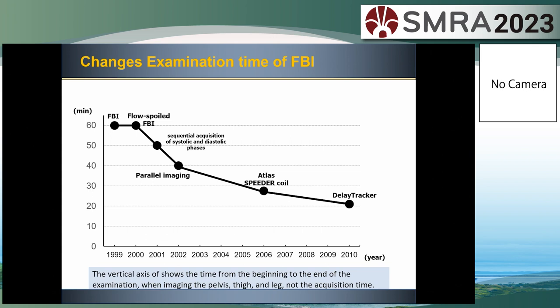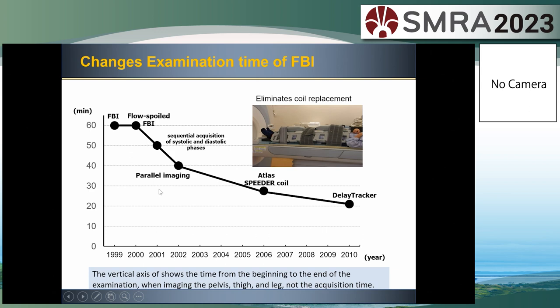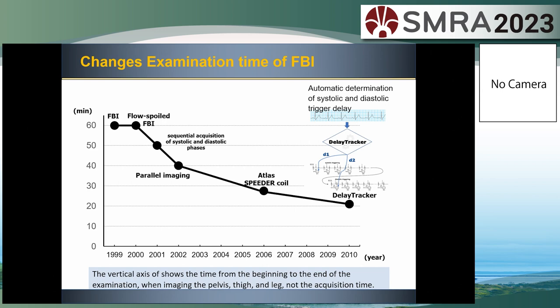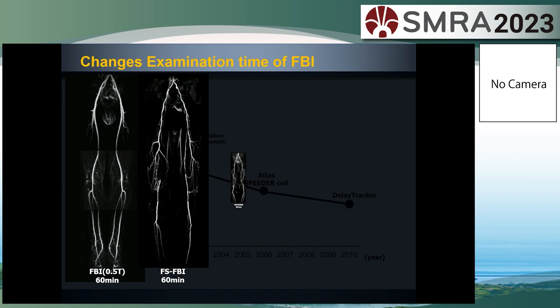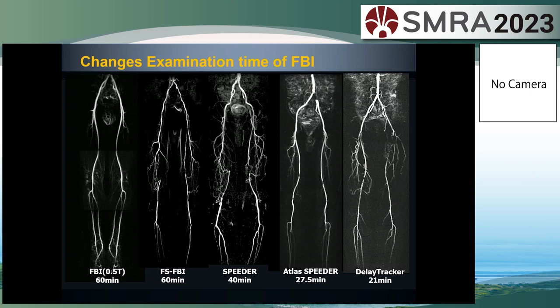This slide shows the changes of examination time of FBI. Initially it took about an hour. Using parallel imaging, it took 40 minutes. The Atlas speeder coil eliminates coil replacement, reducing it to 27 minutes. And using delay tracker, it's about 21 minutes. Looking at image quality from left to right: the original FBI at 0.5T, standard FBI, FBI using parallel imaging with Atlas speeder coil, and with delay tracker. Image quality has reached a sufficient level at the time of using parallel imaging.